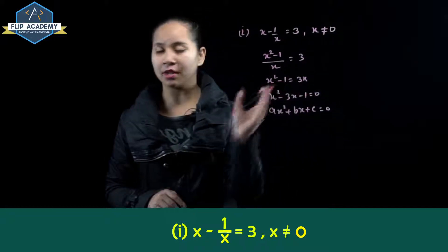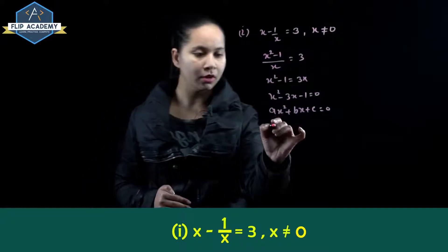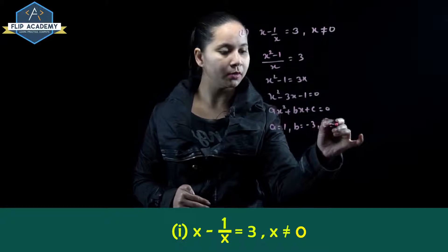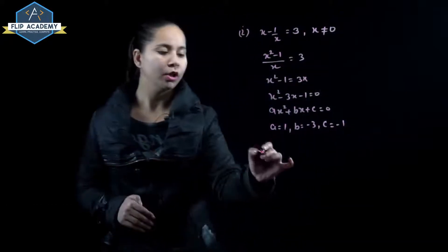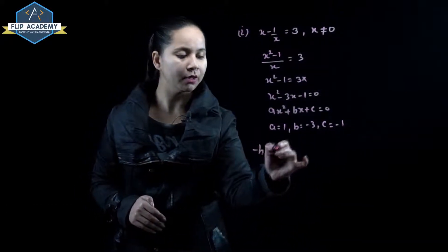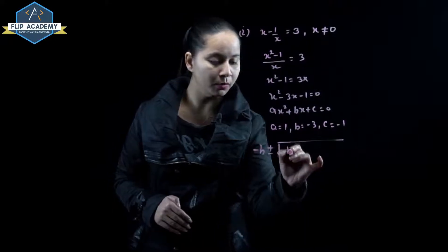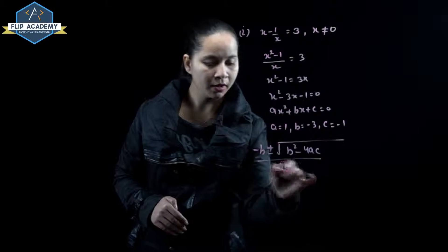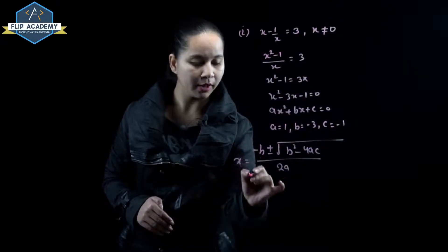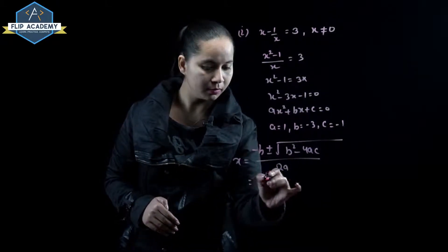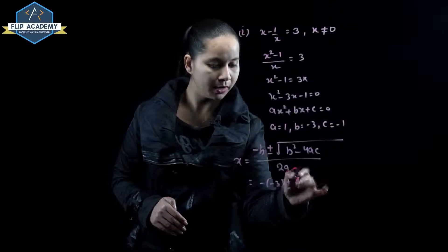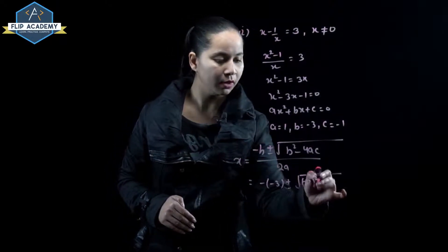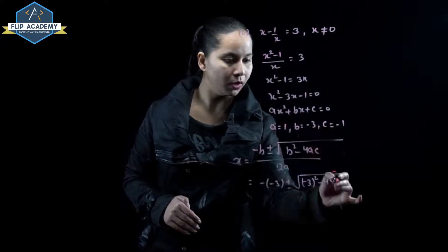Now compare with the general quadratic equation ax squared plus bx plus c equals 0. So a equals 1, b equals minus 3, and c equals minus 1. Now use the quadratic formula: x equals minus b plus or minus square root of b squared minus 4ac, all upon 2a. Substitute all these values.